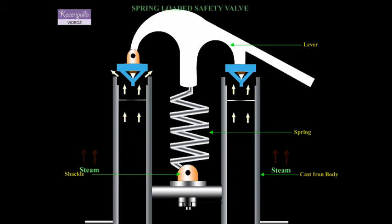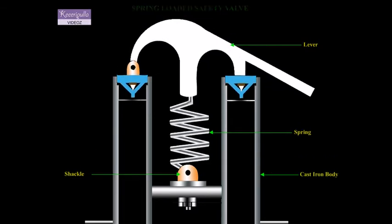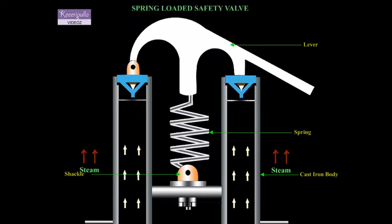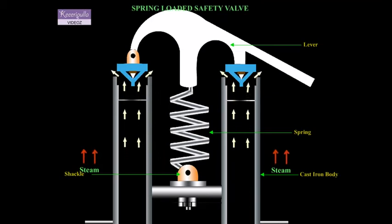The spring pulls the lever downwards and the spring force is distributed equally over the walls. Thus, the valves are held tight to their seats by the spring force.